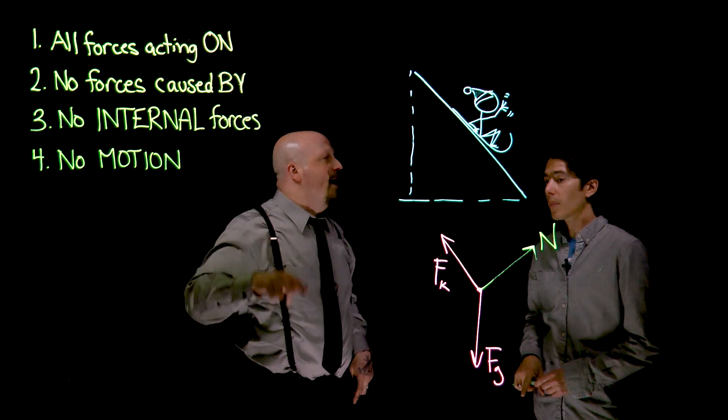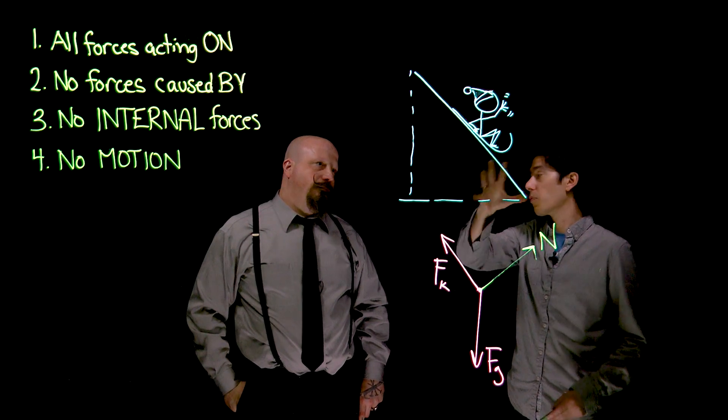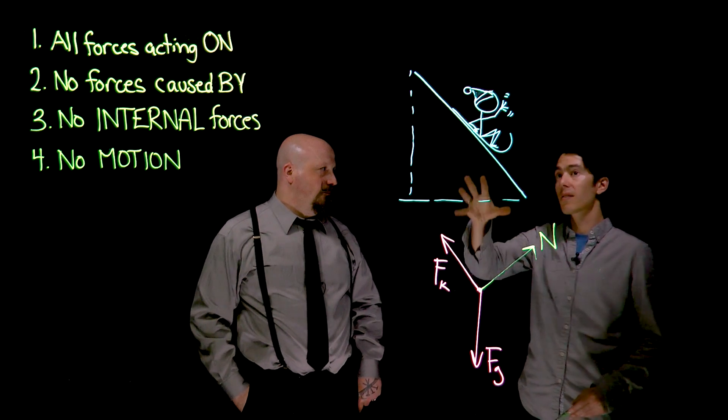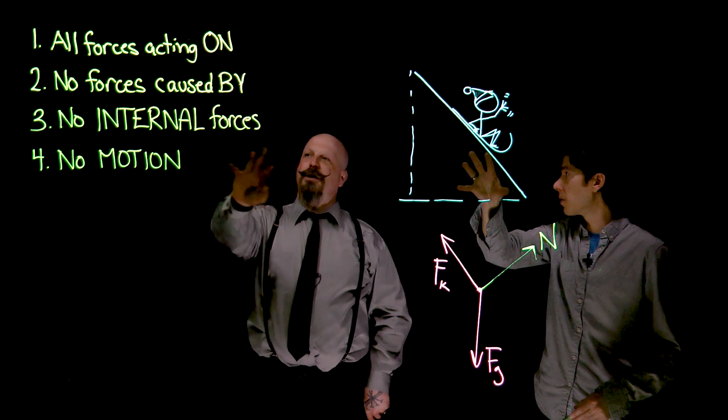This one says no forces caused by the object. The sledder might be exerting forces on their surroundings. And we can't include those because it's only the forces acting on the sledder that dictates the sledder's motion.